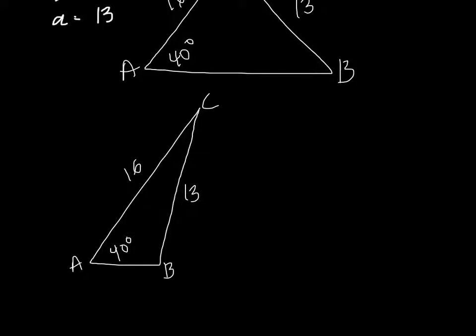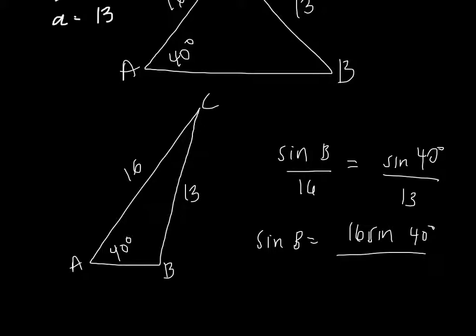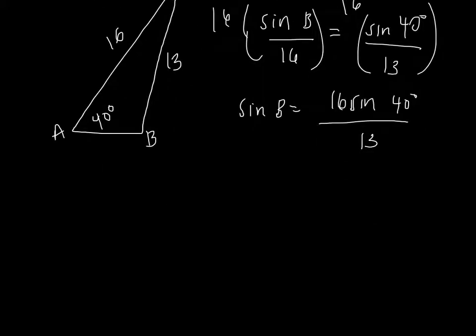So you can use the law of sines to find the possible measures of B. So sine B over 16 equals sine 40 over 13. Therefore sine B equals 16 sine 40 over 13 because we multiply both sides by 16. This simplifies to 0.7911.